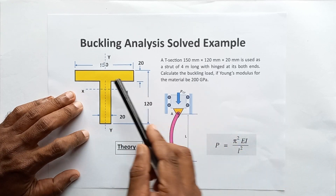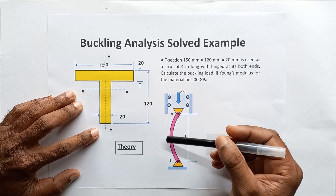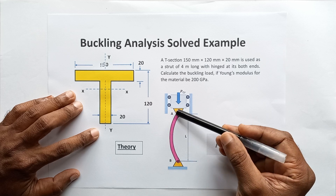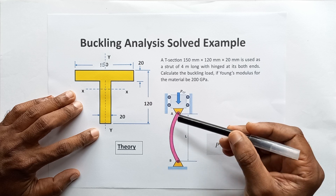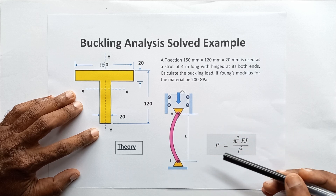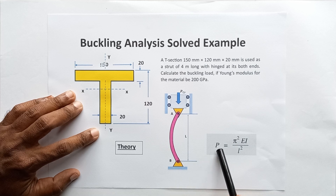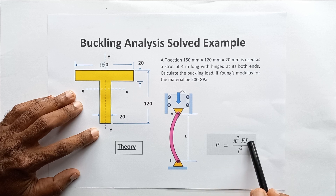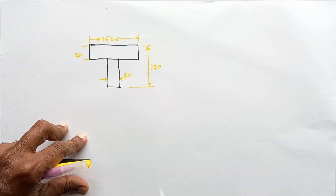This is the cross section given. When the column has both-end pin support, it will buckle forming this kind of curvature. For the both-end pin support situation, the Euler buckling load is given by the equation P = π²EI / L².